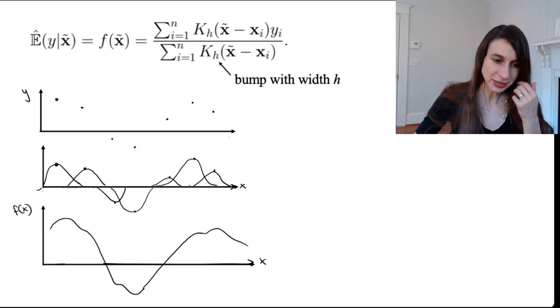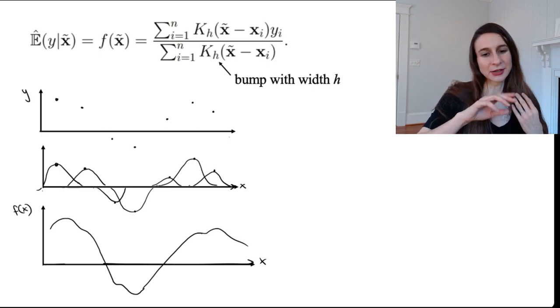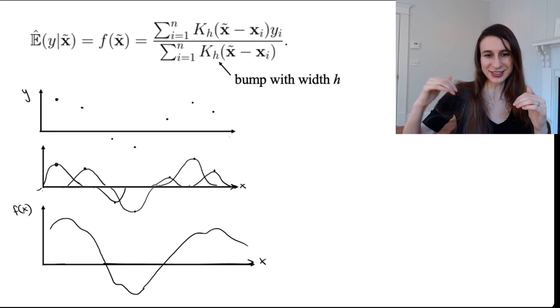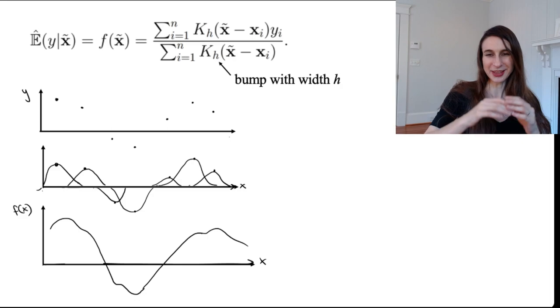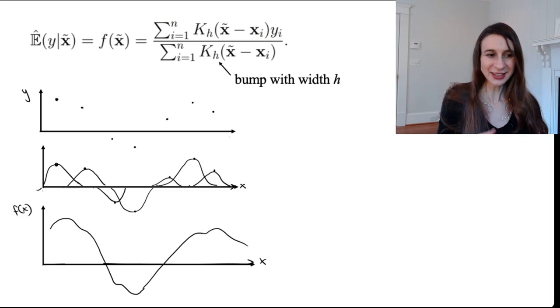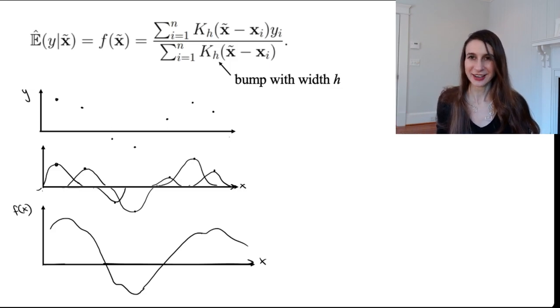I've drawn a bunch of data points there in the first plot, and then on the plot below it I've just drawn a bump centered on each data point with height yi, and then you just add them all up. That's all of kernel regression. It's really much simpler and it doesn't involve any optimization.